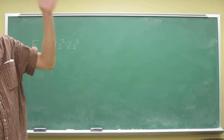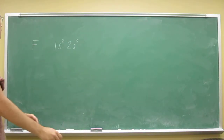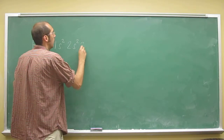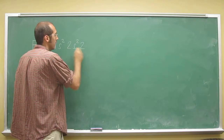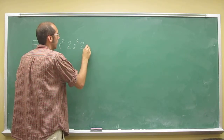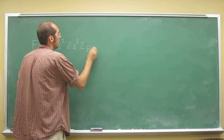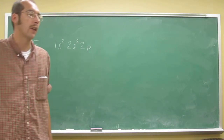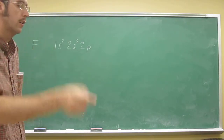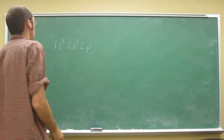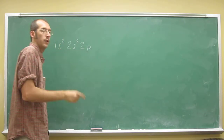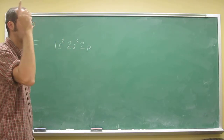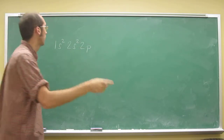On the right side of the periodic table, we call it the p block. So it's still in energy level 2 — 2p. With fluorine, all you've got to do is count how many electrons have been placed there: 1, 2, 3, 4, 5.